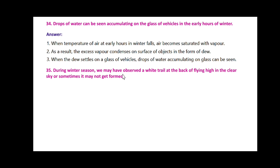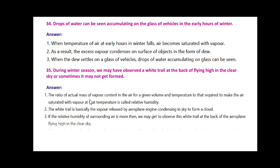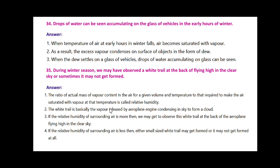During winter season, we observe a white tail at the back of an airplane flying high in the clear sky, or sometimes it may not get formed. The ratio of actual mass of vapor content in the air to that required to make the air saturated at that temperature is called relative humidity. The white tail is basically vapor released by the airplane engine condensing in the sky to form a cloud. If the relative humidity of surrounding air is high, we observe this white tail. If the relative humidity is low, either a small white tail may form or it may not form at all.